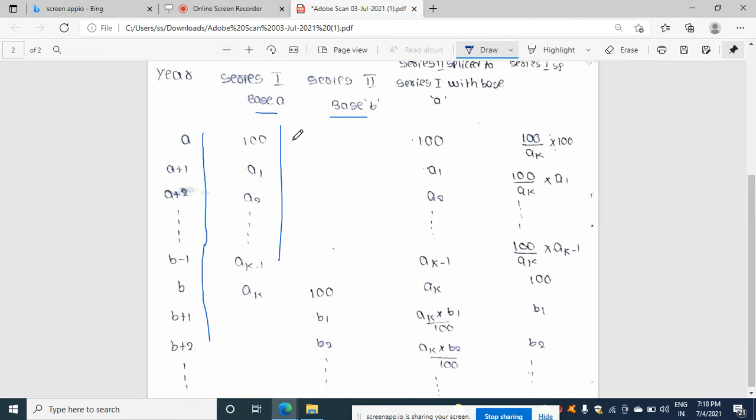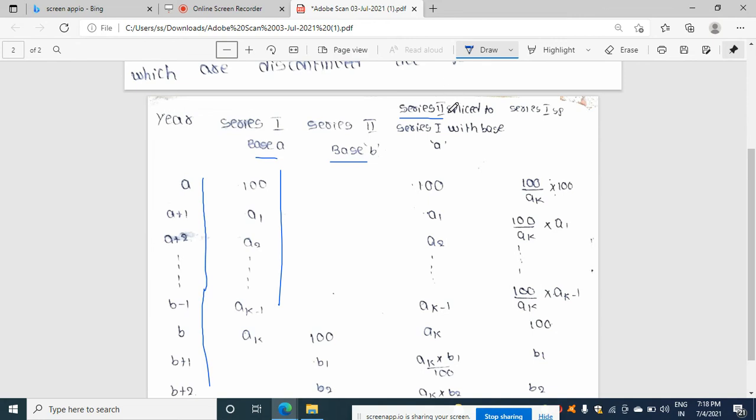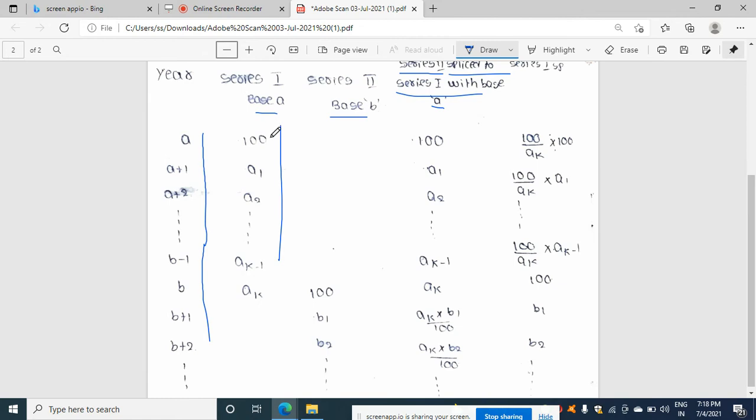So students, here what we will do, we will splice series two. This is second series, series two spliced to series one with base A. Now, how to splice it? We will just write this hundred same, again this A1 also we are writing same. Till here we will write same.